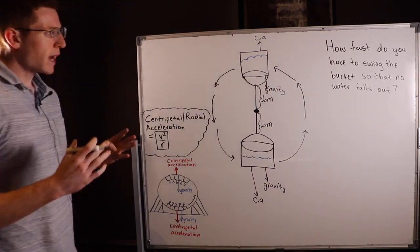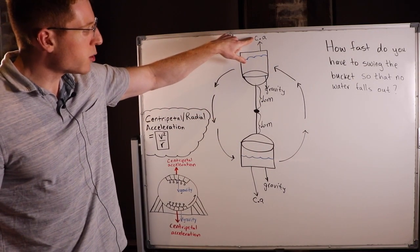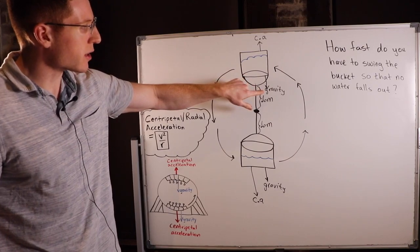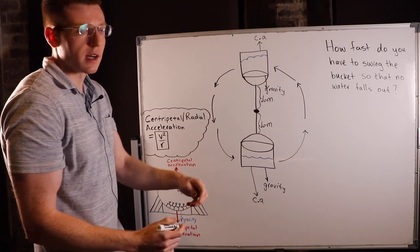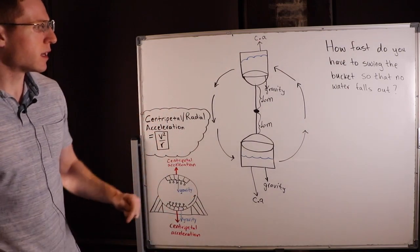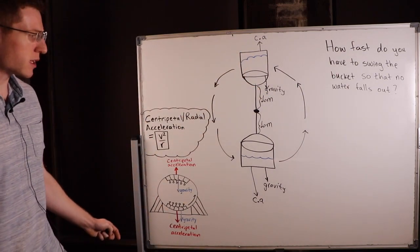You can imagine, if we can get this swinging fast enough so that the centripetal acceleration equals the gravitational acceleration, this water will experience no net acceleration and it'll stay in the bucket. So all we have to do is set centripetal acceleration equal to gravitational acceleration.